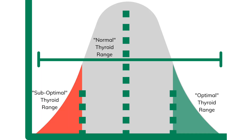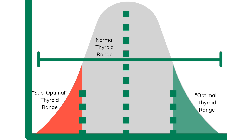Lab ranges for TSH, T4, and other thyroid markers are based on what's called a bell curve or normal distribution of values collected from people who go to labs for testing. Unfortunately, most of those people who go to the lab have blood work done but they're struggling with health issues. This means that the normal ranges for TSH and T4 are based not on the values shown to promote optimal health, but rather on a range of values collected from a sick population.